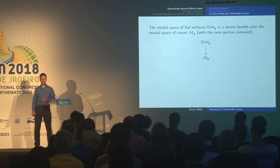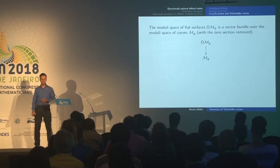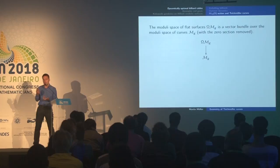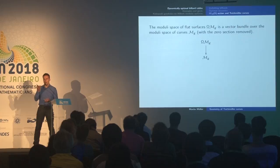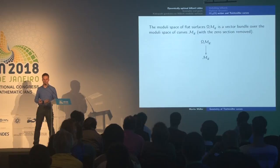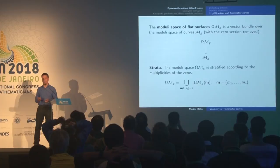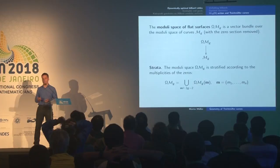To define some objects I will refer to later: there is the moduli space of curves, which is a manifold of complex dimension 3g − 3, and it parametrizes complex curves or Riemann surfaces of genus g. Every such surface comes with a choice of a g-dimensional vector space of holomorphic one-forms. I can package them all together into a vector bundle, which I denote by ΩMg. Points in ΩMg are just the flat surfaces. A holomorphic one-form has 2g − 2 zeros counted with multiplicities, so ΩMg comes naturally with a stratification by the orders of these zeros.